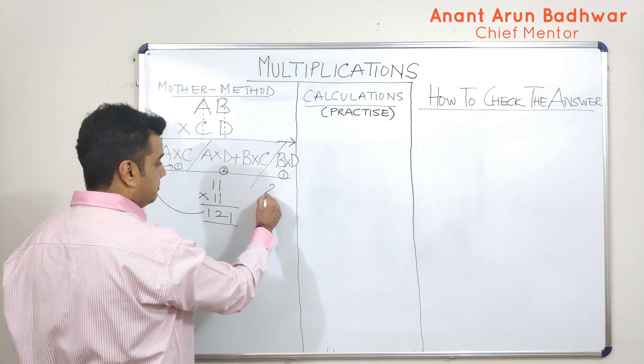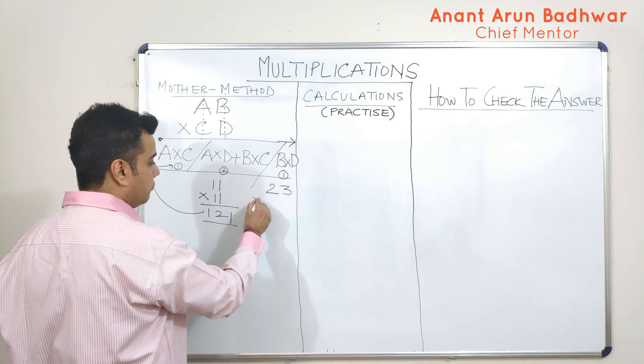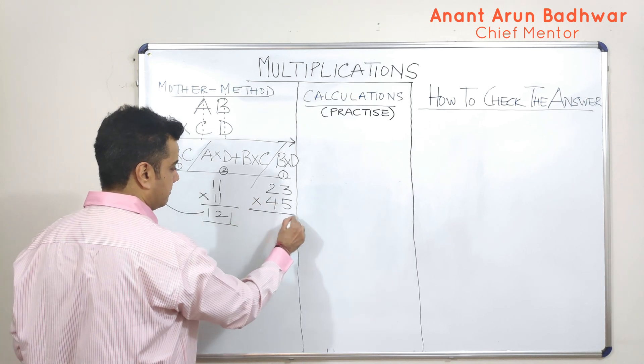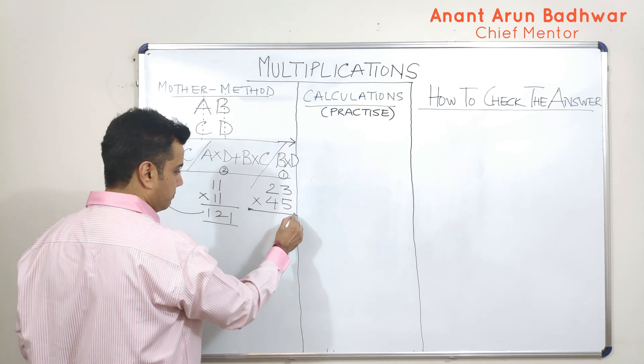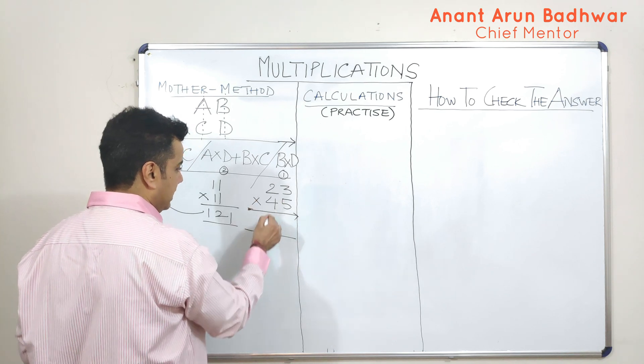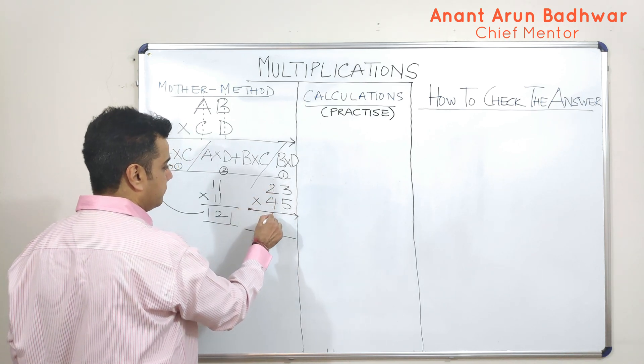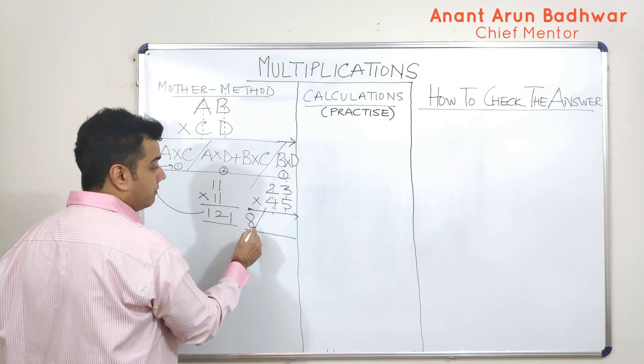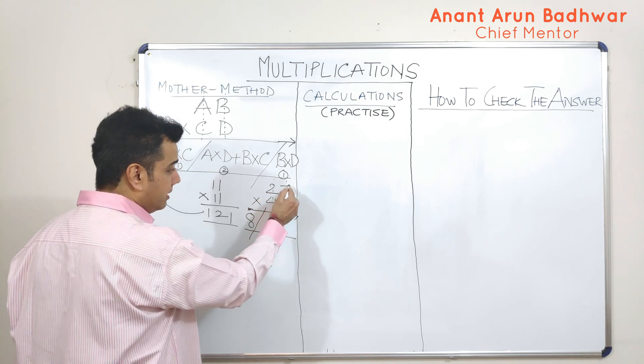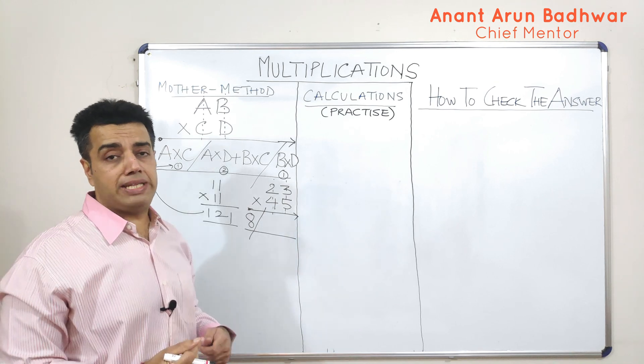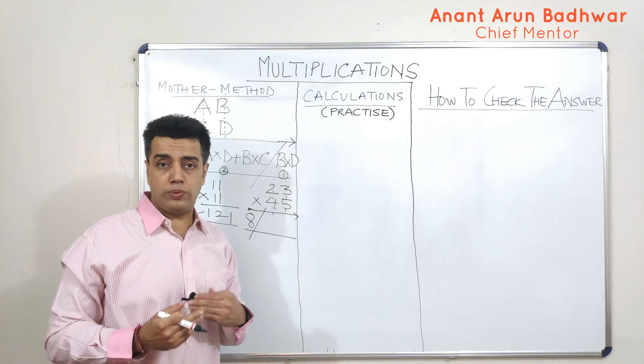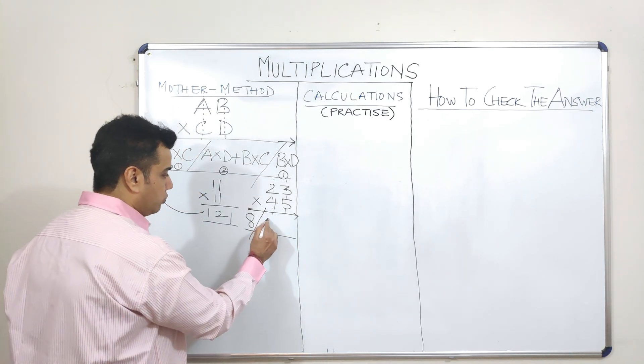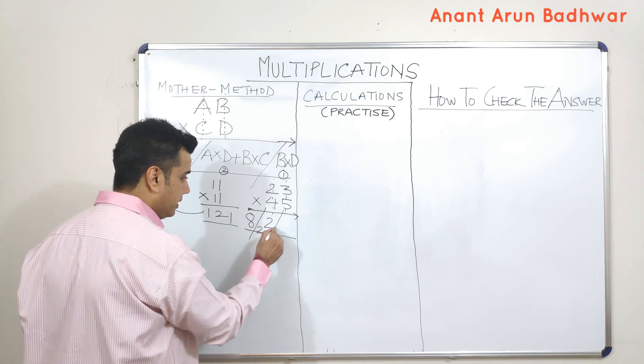I'll take one more example. If somebody asks me to multiply 23 with 45, what am I supposed to do? I'm supposed to start from the left hand side. Let us say this is the first column, this is the second column. How much is 2 into 4? 8. Followed by 5 into 2 is 10. And 4 into 3 is 12. When I add 10 to 12, I get 22.